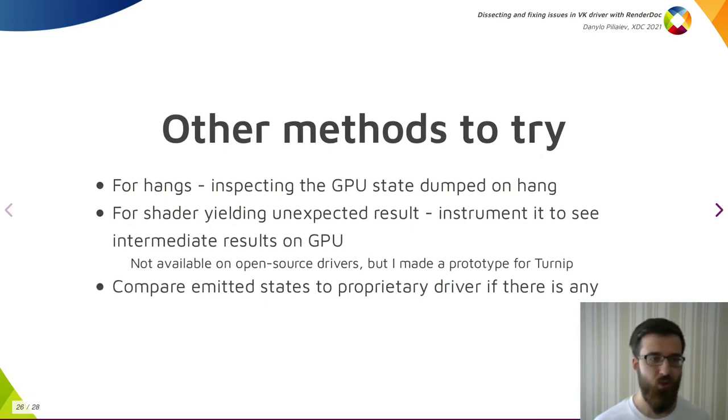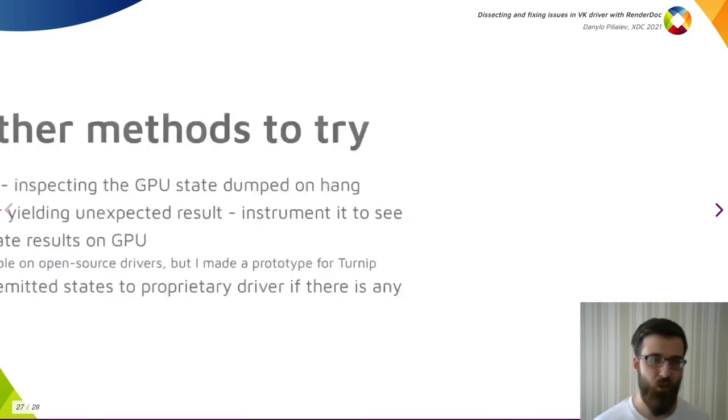Aside from good old intuition, there are many more things to try. For hangs, you could inspect the GPU state which is dumped on a hang. Its usefulness varies between the kernel and GPU vendor, but you could try. For shader yielding an unexpected result, it could be possible to instrument it and see what is really happening on GPU. That's not something that's available on open source drivers, though I recently made a prototype for Turnip which I successfully used a couple of times. Another method to try is to compare the states emitted between your driver and the proprietary one, if there is any, and it does the work correctly.